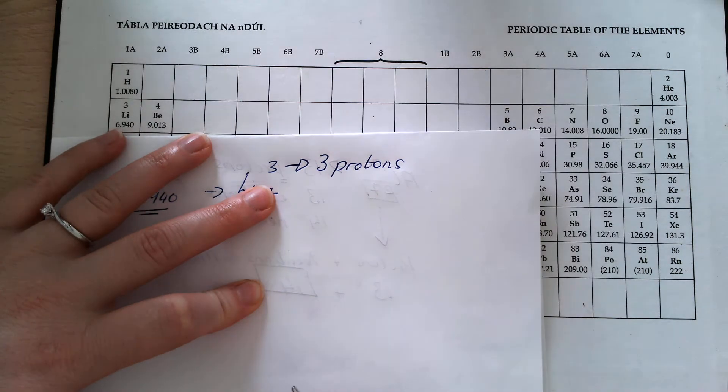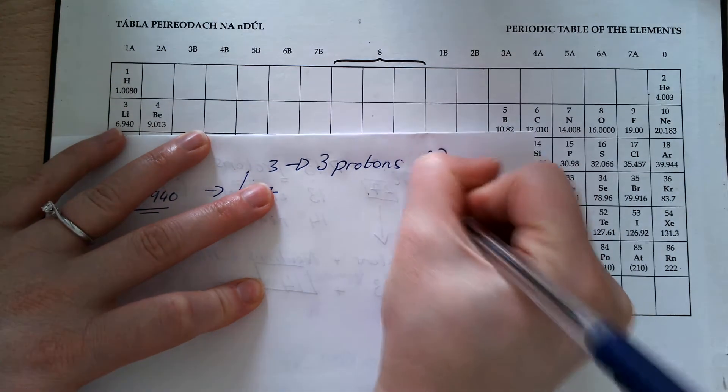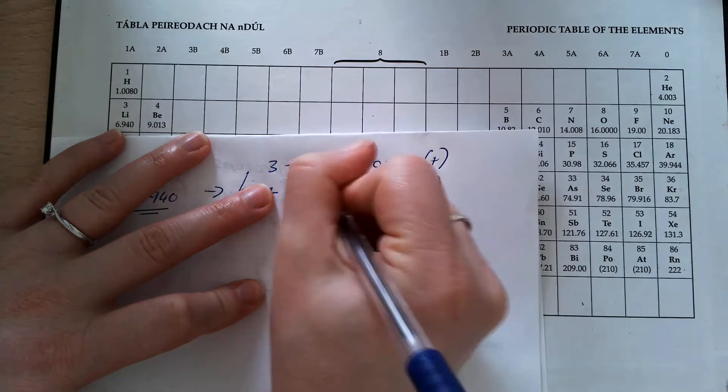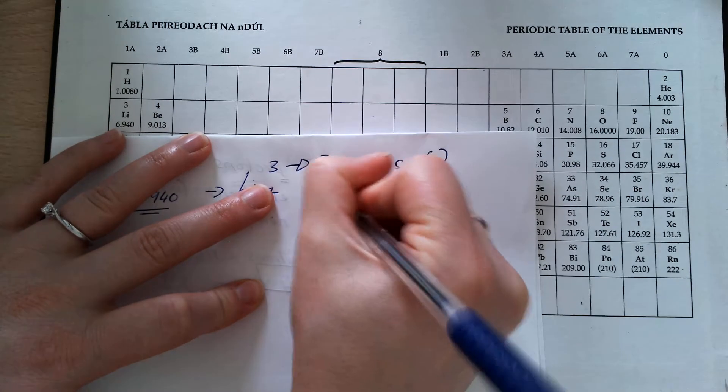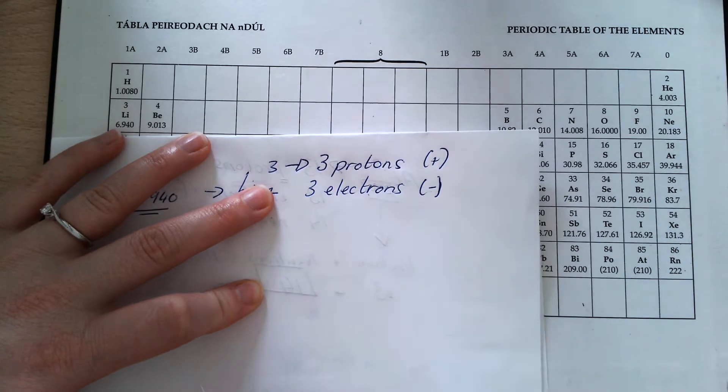In any neutral atom, the number of positives has the same number of negatives. My negative particles are electrons, so it has 3 electrons.